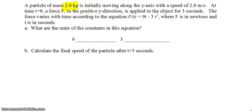We have a mass of 2 kilograms initially moving along the y-axis with a speed of 2 meters per second. At time t equals 0, a force F in the positive y direction is applied to the object for 3 seconds. The force varies with time according to the equation F(t) = 9t - 3t², where F is in newtons and t is in seconds.